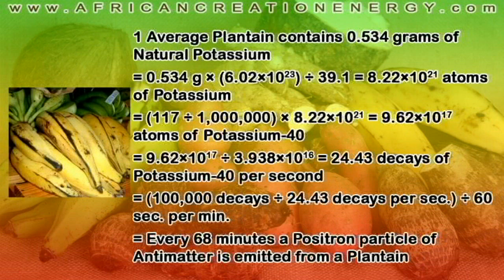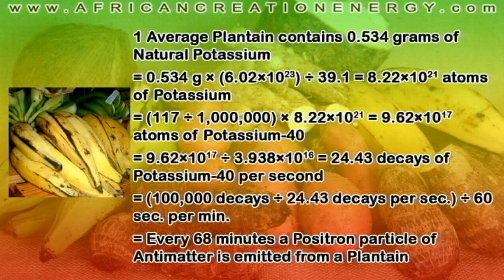When we do our rate calculation, we find that 24.43 decays of potassium-40 occur per second in the average plantain. Since we know how many decays of potassium-40 occur per second, we can find out how many of those are positron particles of antimatter. Our final calculation gives us every 68 minutes, a positron particle of antimatter is emitted from a plantain. I know I'm going through some of these calculations fast, and you can pause and rewind to go over it. But every 68 minutes, a positron particle of antimatter is emitted from a plantain.